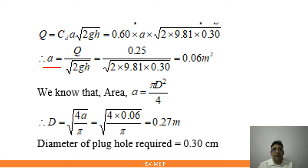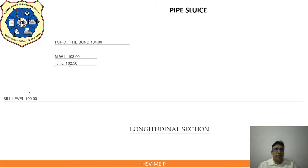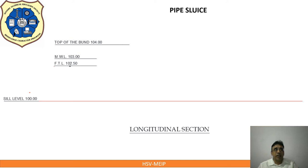This is 5 marks - a simple calculation you should carry out. After calculating this, we will start drawing the longitudinal section of the pipe sluice. For drawing the longitudinal section, you have to first draw a horizontal line at sill level - sill level 100.00. Then mark FTL 102.5, MWL 103.00, and top of bund level 104.00. All this marking you have to carry out at 1 to 50 scale. In thin lines, draw all these lines - TBL line, MWL, FTL and all.